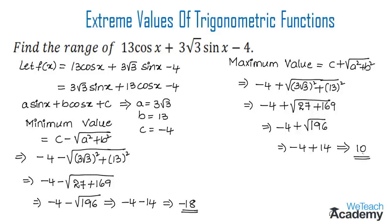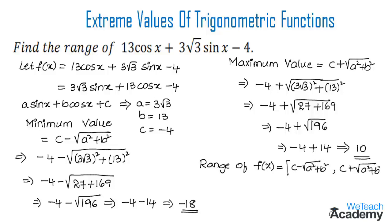So 10 is the maximum value of the given function. The range of f(x) is [c - √(a² + b²), c + √(a² + b²)], that is [minimum value, maximum value]. Therefore the range of f(x) is [-18, 10].